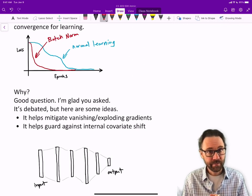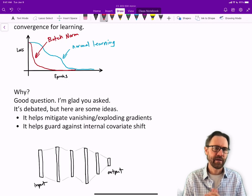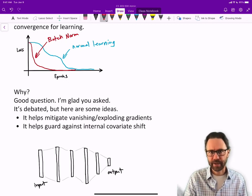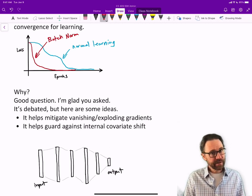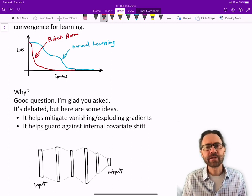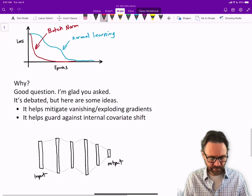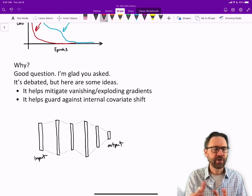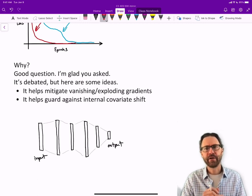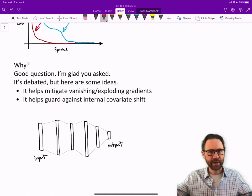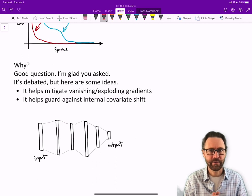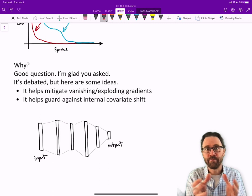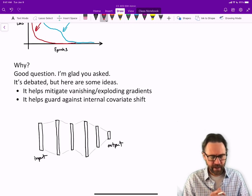You might be asking why does that happen? Well, good question, I'm glad you asked. It's a contentious issue. A number of people have come up with explanations for why, and no one really knows for sure. Here are some ideas that are basically floating around. First of all, it helps mitigate against vanishing and exploding gradients. If you're going to rescale your representations after each layer, it's going to help avoid bizarrely large output currents or very large activities.